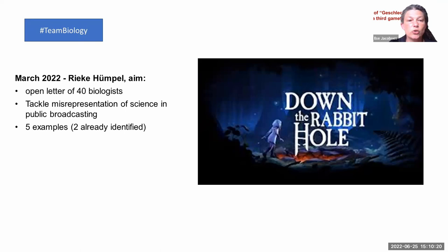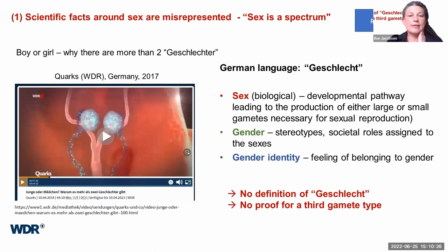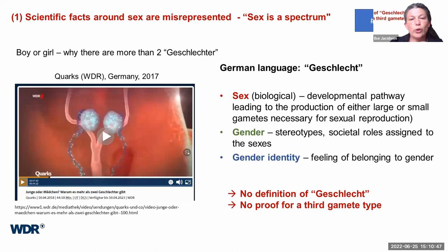The first example is about scientific facts around sex. What you see on the left is a screenshot from a science show published by one of the public broadcasting agencies, the WDR, where the German title roughly translates into 'Boy or Girl, Why There Are More Than Two Sexes.' The German word Geschlecht has no very precise meaning.